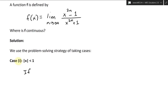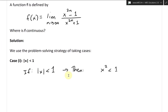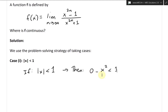If we have the absolute value of x less than one, then x squared is also going to be less than one. Because when you square a number less than one — for example, 0.9 times 0.9 is 0.81 — multiplying less than one gives less than one. And it's going to be greater than or equal to zero, because squaring always gives a positive result.